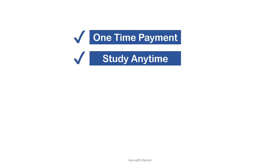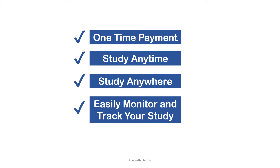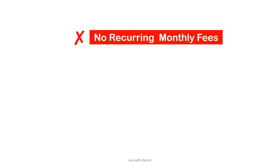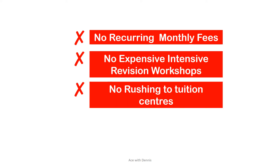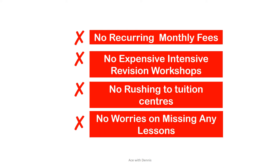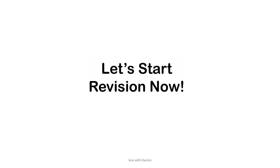It's a one-time payment. You can study any time you like, anywhere at your convenience. You can also easily monitor and track your study with Udemy's system. There is no recurring monthly tuition fees, no expensive intensive revision workshops. You don't have to rush to any tuition centers or worry about missing any lessons. Sign up to our signature online course at the description area now. Without further ado, let's get started.